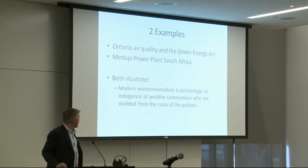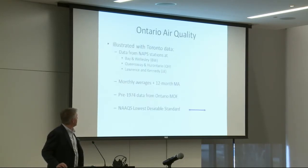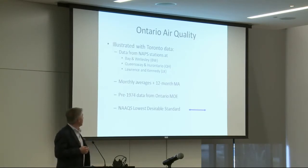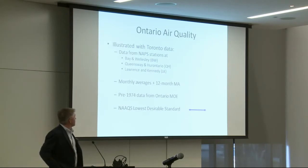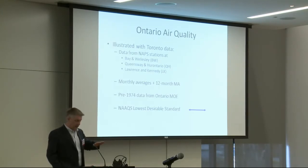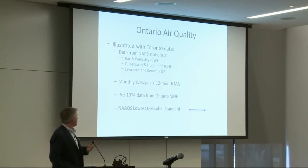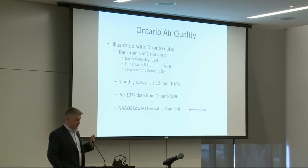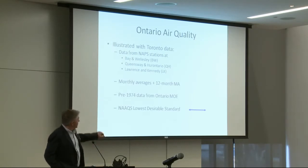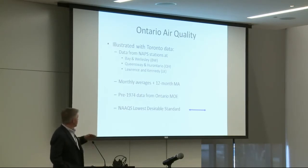Both examples I'll discuss — Ontario Air Quality and the Green Energy Act, and the Madupi Power Plant in South Africa — illustrate how modern environmentalism is increasingly becoming an indulgence of wealthy communities shielded from the costs of the policies they're advocating for. On Ontario Air Quality: the data I'll show comes from the NAPS National Air Pollution Surveillance System, a network of provincially run monitoring stations, with data going through a secondary quality control process before being archived at Environment Canada. The earliest data for Toronto goes back to 1962.